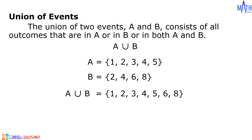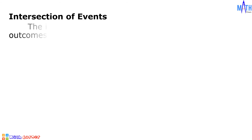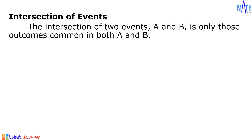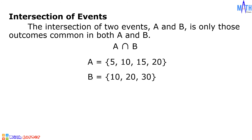In the union of two events, combine all the elements or outcomes of both events. Next is the intersection of events. The intersection of two events A and B is only those outcomes common in both A and B. The intersection of events A and B is denoted by this. For example, event A consists of the elements 5, 10, 15, and 20, and event B consists of the elements 10, 20, and 30. The intersection of events A and B consists of the elements 10 and 20.